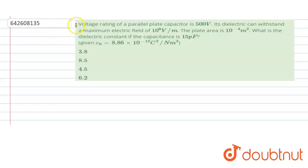The problem states that voltage rating of a parallel plate capacitor is 500 volt. Its dielectric can withstand a maximum electric field of 10^6 volt per meter.